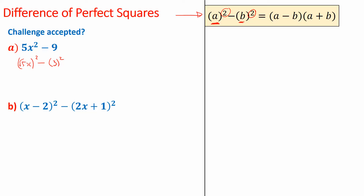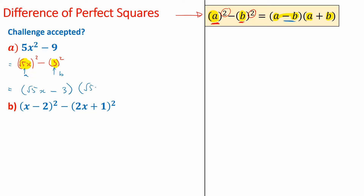Now it's subtract. If I'm going to use the rule — the rule says if you have A and you have B — this is my A and this is my B. According to the rule, I can have A minus B and A plus B. So I'm going to write that down. This is my A, this is my B. So if I follow that formula, the answer should be root 5x minus 3, times root 5x plus 3. That's called factorizing — factorizing into two brackets — and I've used difference of perfect squares.